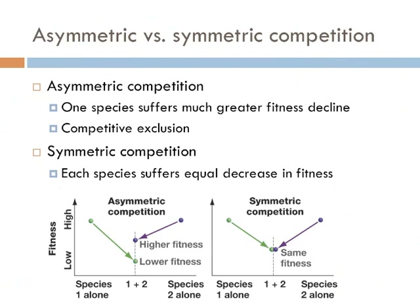As it turns out, there are actually different kinds of competition. The previous example was a case of asymmetric competition, where one species highly outcompetes the other, and one species suffers much greater fitness decline than its competitor. Asymmetric competition is driven by competitive exclusion. Species that suffer equal decrease in fitness is known as symmetric competition. However, most competition relationships lie somewhere between asymmetric and symmetric competition as a continuum.